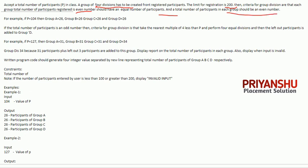For example, if the number is 104, which is an even number, you can divide it by four because we need four groups. So 104 divided by 4 gives 26. Each group gets 26 participants.